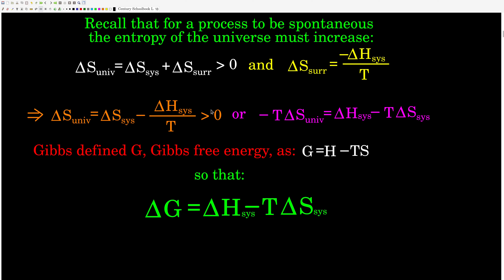And for something to be spontaneous, that must be positive. If we multiply through by negative T, it ends up that the negative T comes over here. We get: negative T times delta S of the universe is equal to positive delta H of the system minus T delta S of the system.